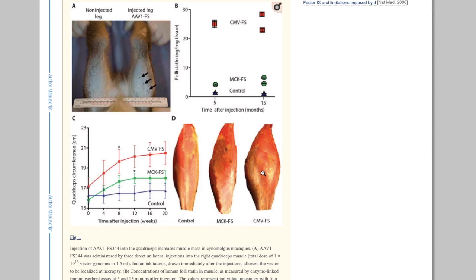Now keep in mind, this is not realistic in real life, because these monkeys were injected with a genetically engineered virus that makes your body overproduce follistatin.